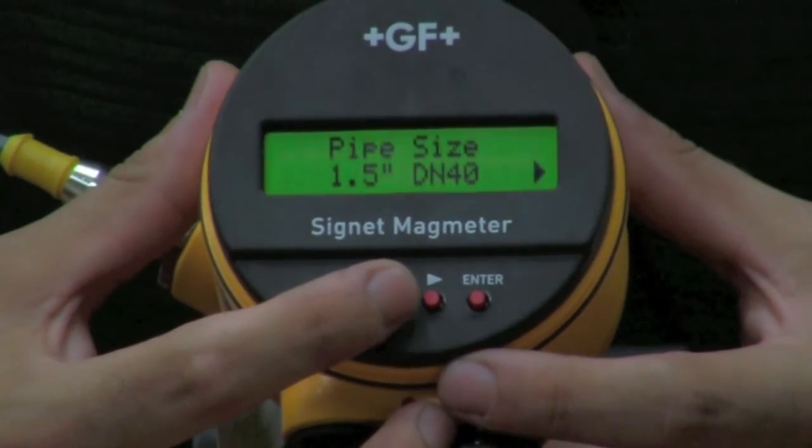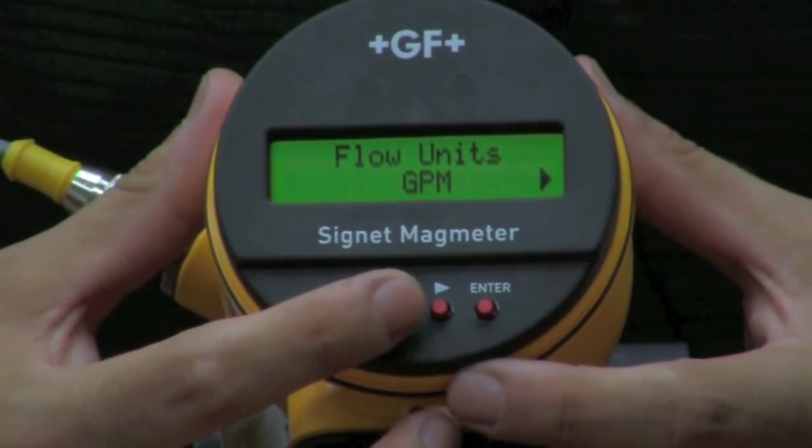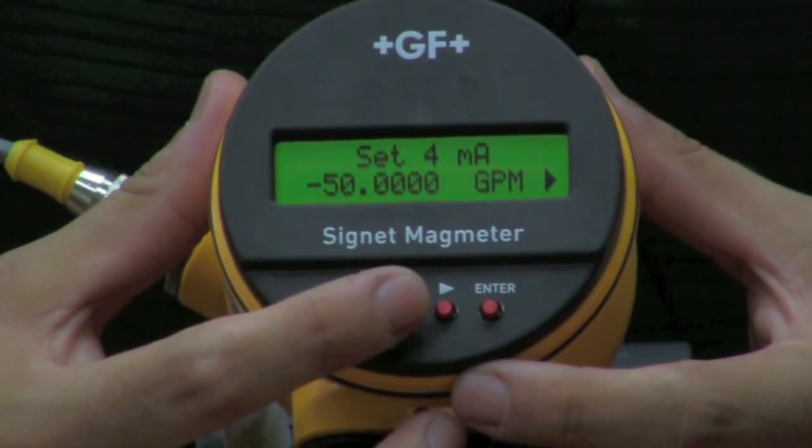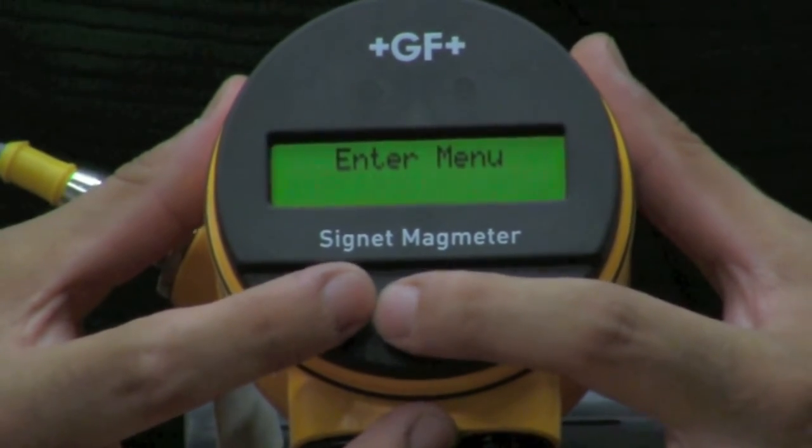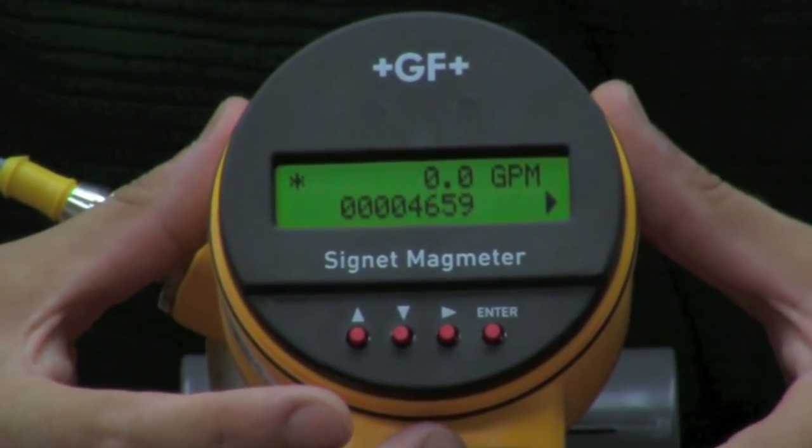The K factor, the line size, the units, and then we can scale our 4 to 20. From here we press our down and up twice to back out, and we are now able to read flow.